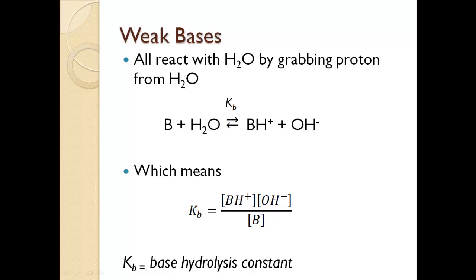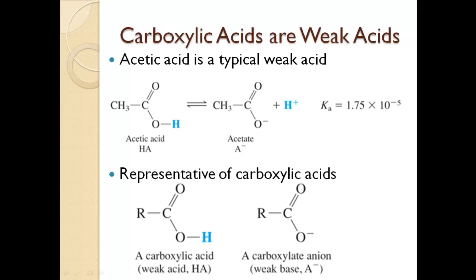Now you need to start recognizing functional groups that make weak acids and weak bases. Carboxylic acids are a key example — here I'm showing you acetic acid and its conjugate base pair, the acetate ion, along with its acid dissociation constant. The functional group of a carboxylic acid is COOH, where R represents the remaining group in the molecule. The representative anion is called the carboxylate anion.